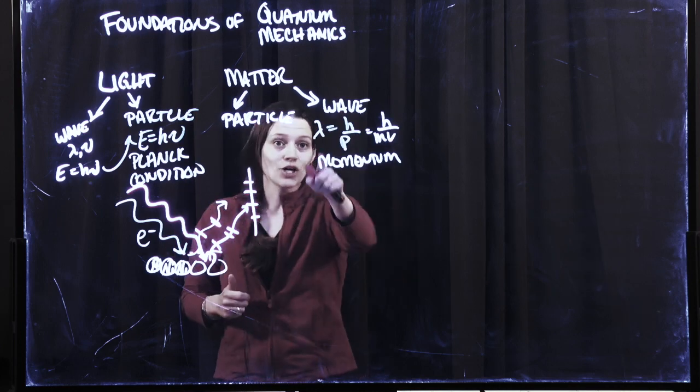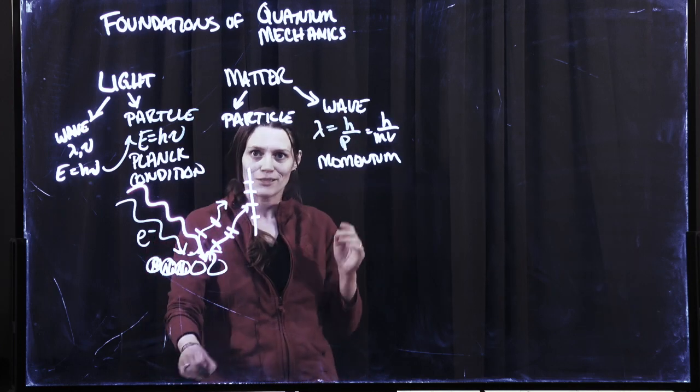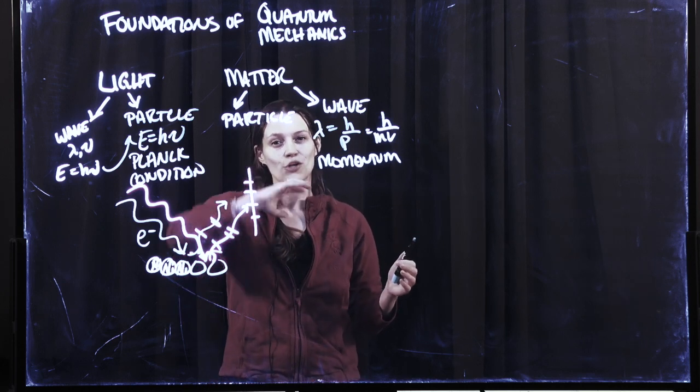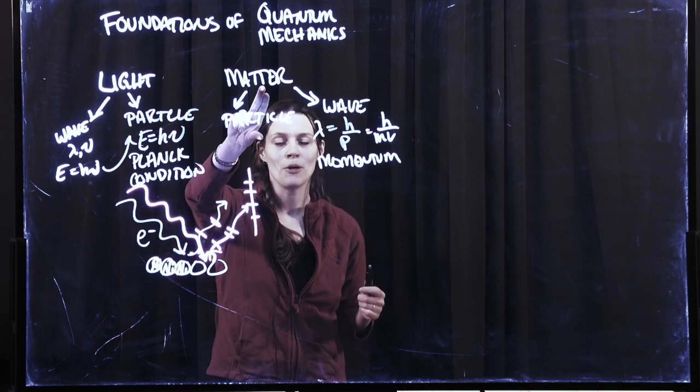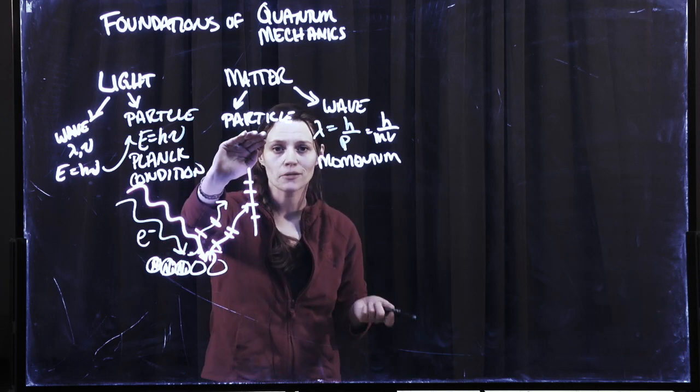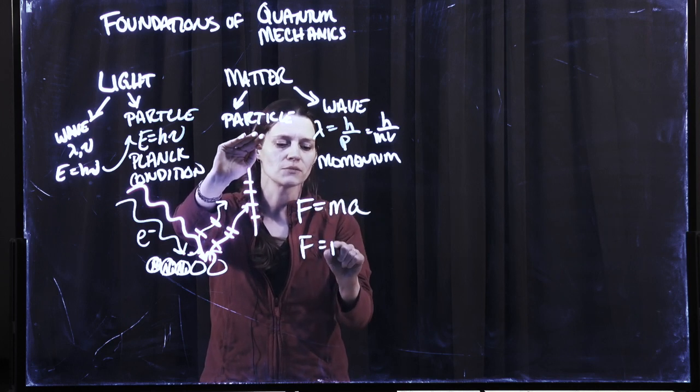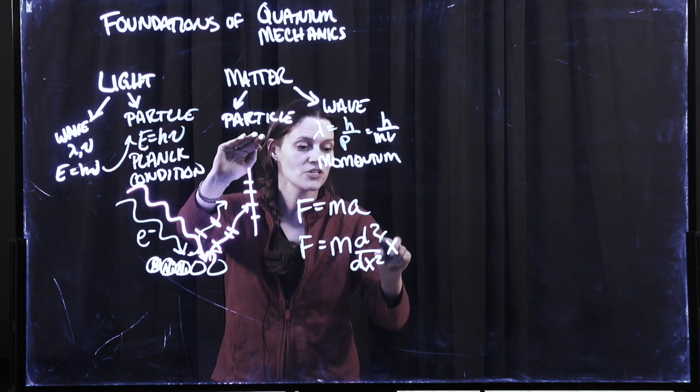The fact that they saw that showed that matter also behaves as a wave. Crazy, right? So if matter behaves as a wave, that means that we need new equations to represent how we can describe matter. If it acts like a particle, you have F equals ma, or F equals mass times the second derivative of the position.